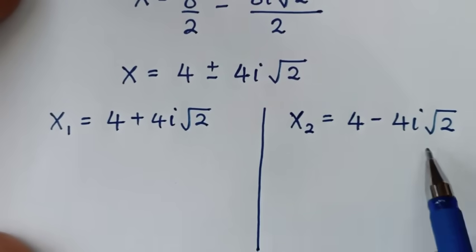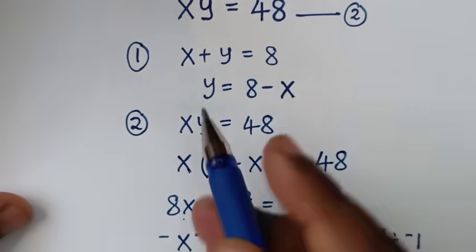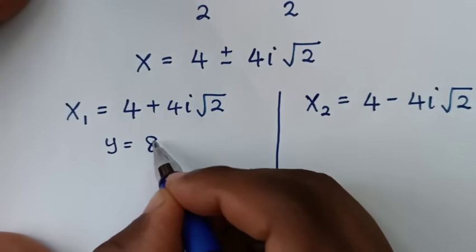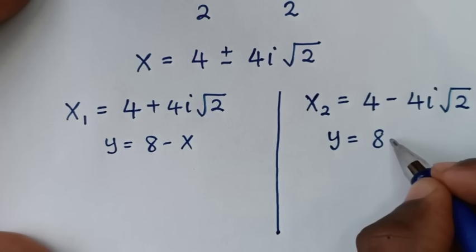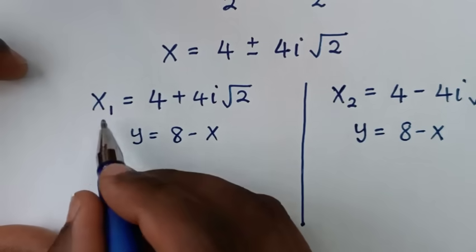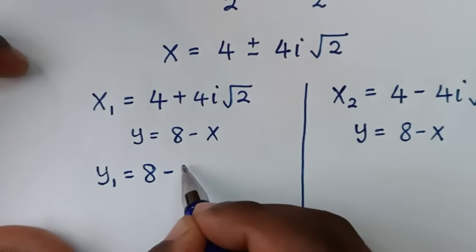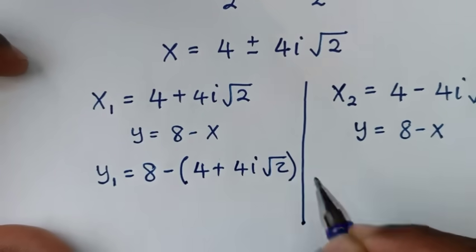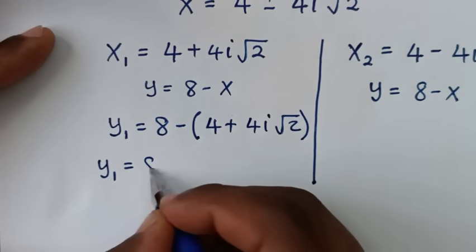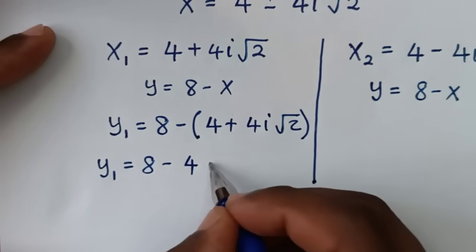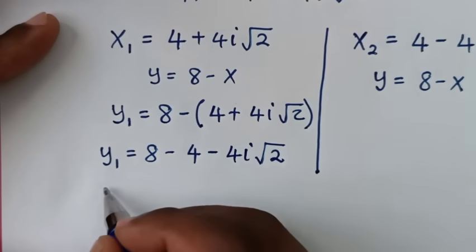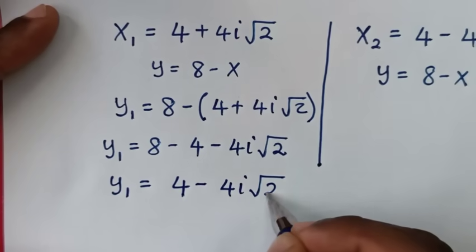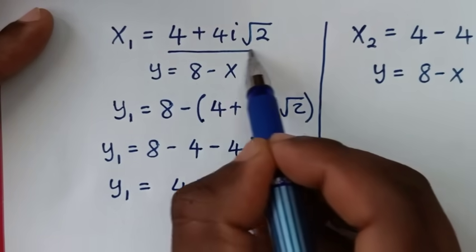Then after getting the values of x, to get the value of y we'll recall this step where y is 8 minus x. To get y1 is equal to 8 minus x1, which is 4 plus 4i square root of 2. So it will be y1 is equal to 8, taking the negative inside the bracket, minus 4 minus 4i square root of 2. So y1 is equal to 8 minus 4, it is 4, then minus 4i square root of 2.